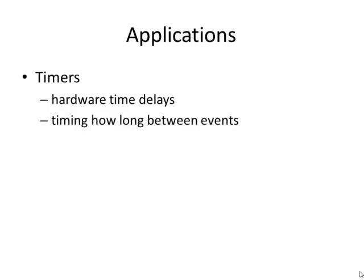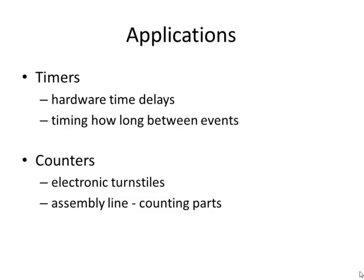We might also want to time how long it is between two events — how long does it take for two events to occur, how long in between them? For counters, one of the more common applications is electronic turnstiles. If you've been to a concert or a sporting event, you might have gone through the turnstile — that's the big wheel that counts how many people have gone in. On an assembly line, we often have to count parts going down the line, and after, say, 24 parts go by, it wants to do something else. So we can use counters for that application as well.